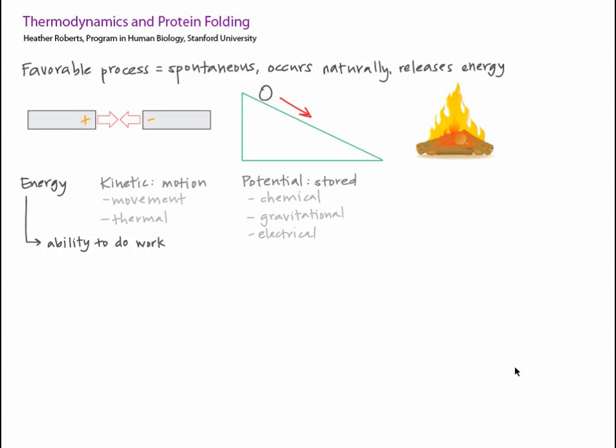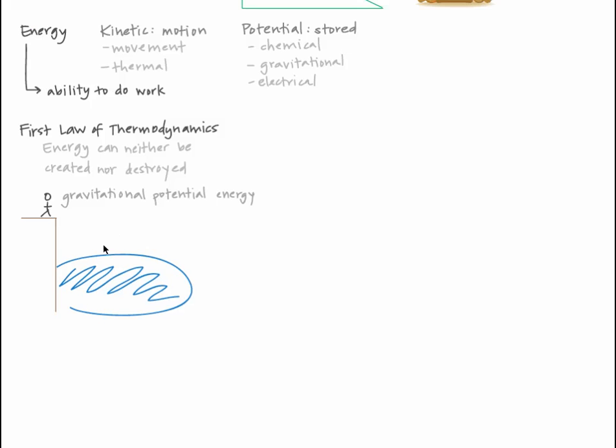For our purposes, there are two important laws about energy. The first is that energy can neither be created nor destroyed. Instead, energy is converted between forms. For example, if you're standing on a cliff 20 feet above a lake, you have high gravitational potential energy. Once you jump off, that potential energy is converted into kinetic energy.